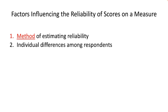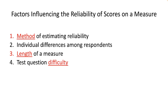Individual differences among respondents may result in different reliability for different samples — some respondents may not have the same reading ability and may be confused by test items. The length of a measure affects reliability: more items leads to higher reliability. An IQ test with one question is ridiculously unreliable. Test question difficulty also affects reliability; questions of moderate difficulty — a difficulty of 0.50 — increase the ability to differentiate between respondents, meaning half the sample should get the question wrong.